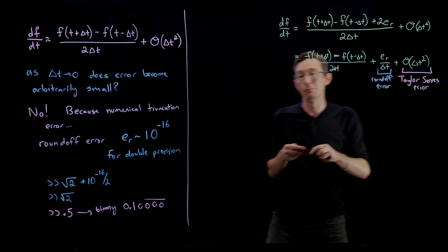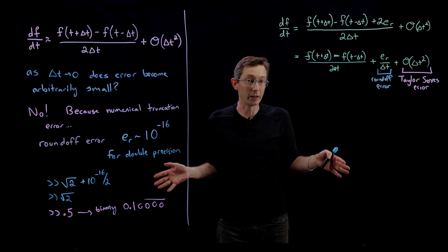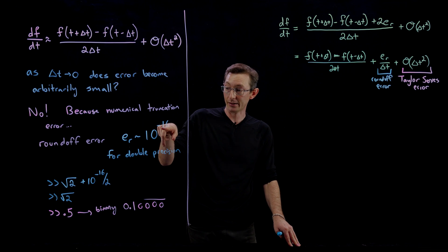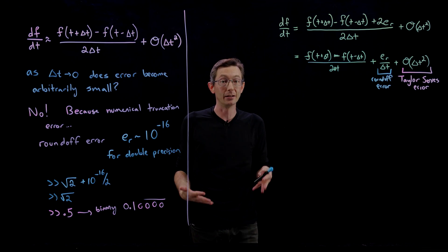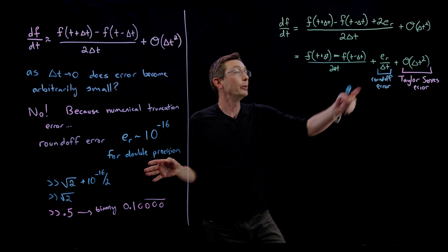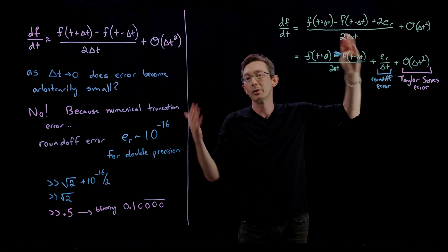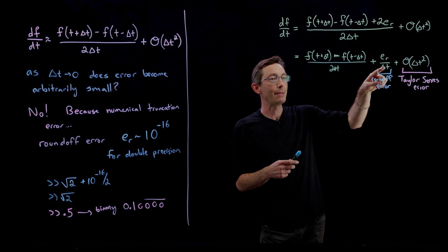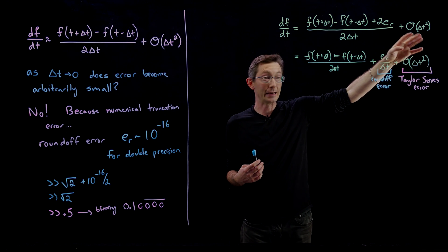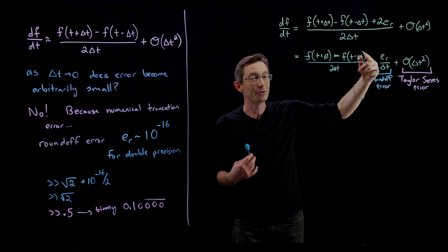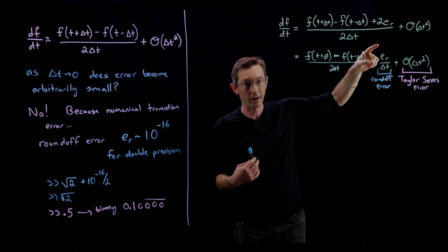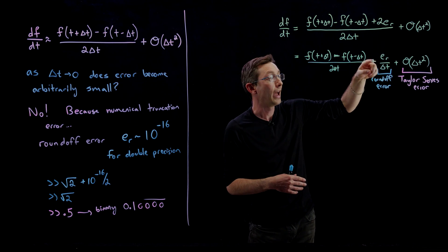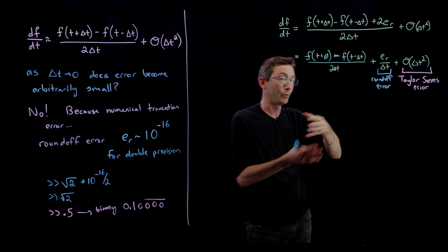There are ways of using more bits — 64, 128, or 256 bits — to get quad precision or oct precision, taking E_r up to 10 to the minus 32 or 10 to the minus 64. That's more expensive and not natively supported on a lot of computing architectures. But pictorially, if I make delta t smaller, it helps my Taylor series error, but I'm dividing by delta t in the roundoff term — so the smaller I make delta t, the larger that roundoff error becomes. At some point these two cross, and making delta t smaller actually makes the total error larger.